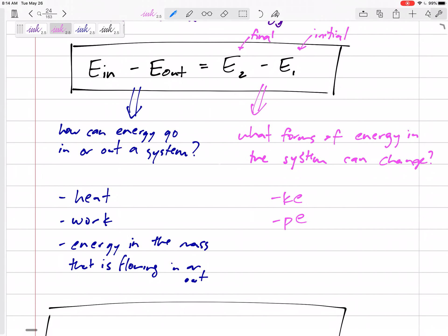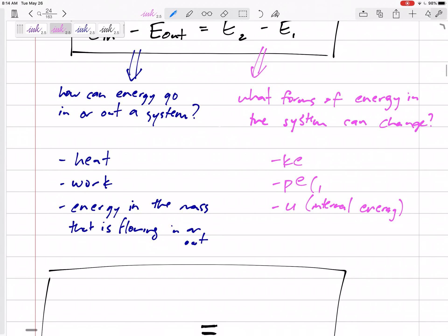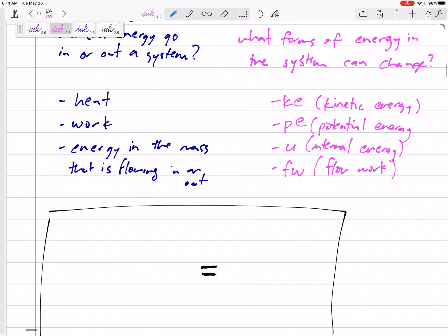Potential energy, maybe it's at one height, but afterwards it's at another height. Internal energy. Let me write these. Potential, kinetic. And maybe flow work. We'll tell you how we quantify flow work. Sometimes it's kind of on the right, sometimes it's on the left, sometimes it's combined with the flow going in and out.